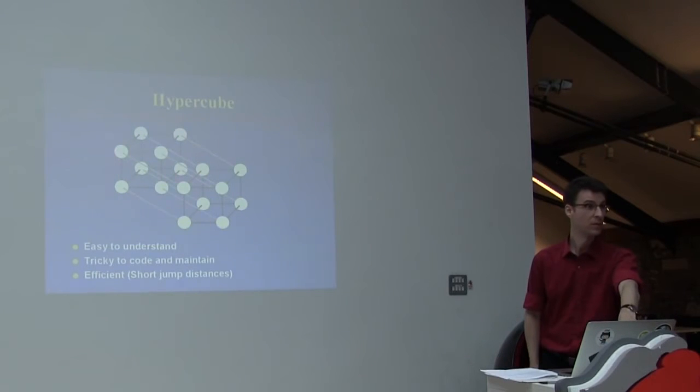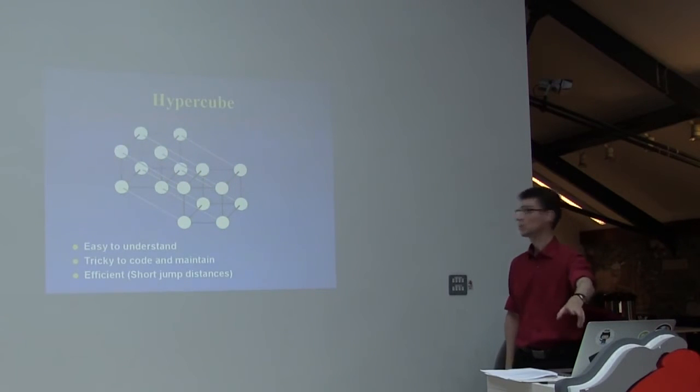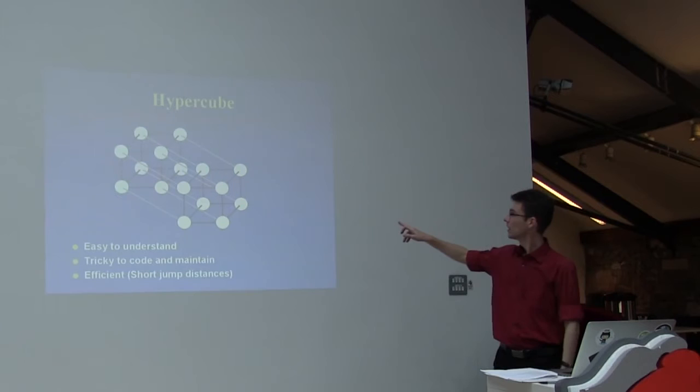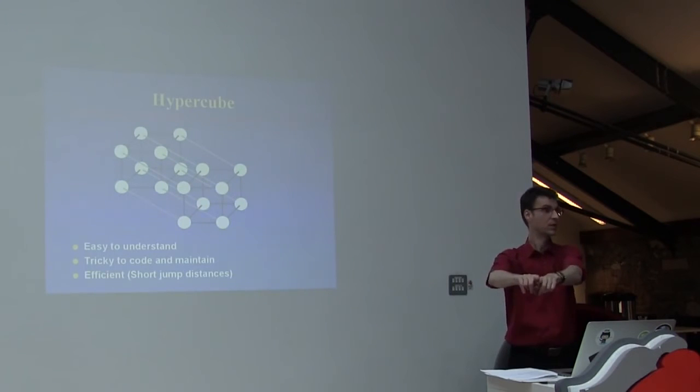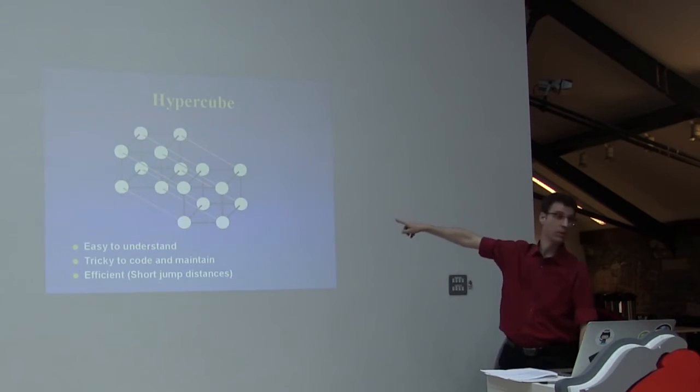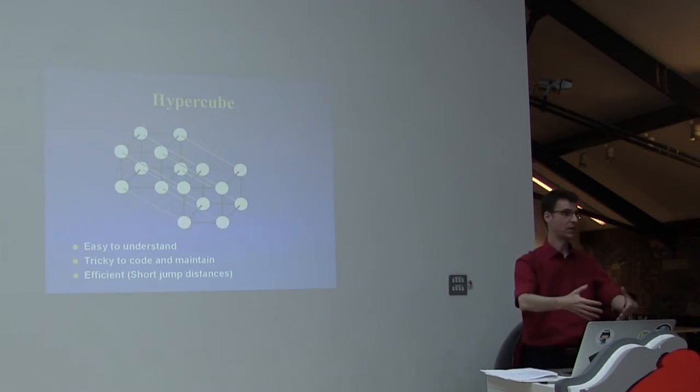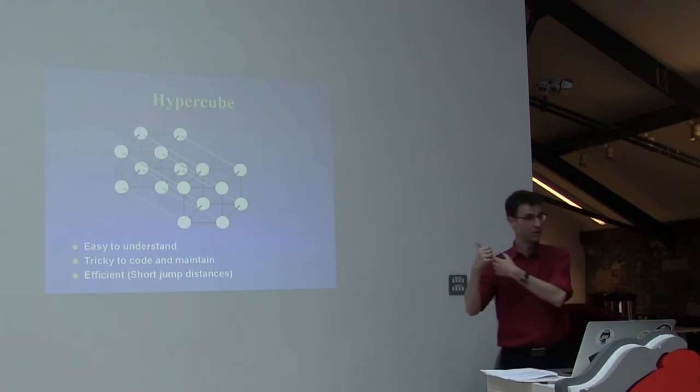Hypercubes, we use them as a routing overlay on these peer-to-peer systems. Because when you have a target address, you can simply compare it with your own address, and take any bit that doesn't match, and send a message to one of your neighbors that has that bit set. So you actually have several ways to route messages. It's very simple to route around problems like that.